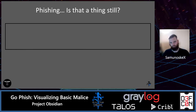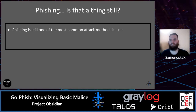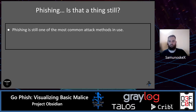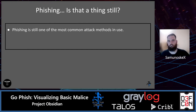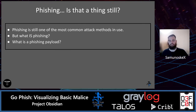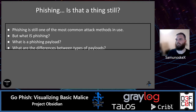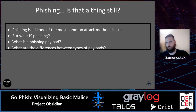Phishing is still one of the most common attack methods in use today. Generally, phishing is a way for an adversary to get credentials or information from an individual via nefarious or malicious means. A phishing payload is the method of getting that data — it could be a document, a zip file, or a link in an email. There are differences between these different types of payloads.